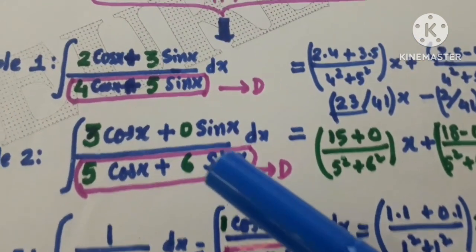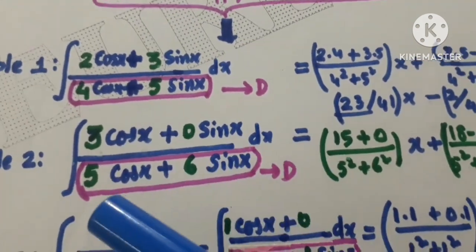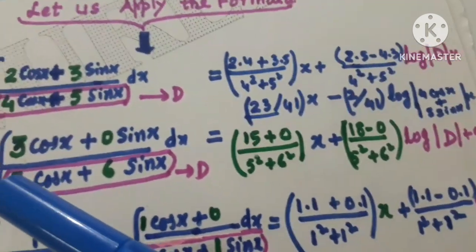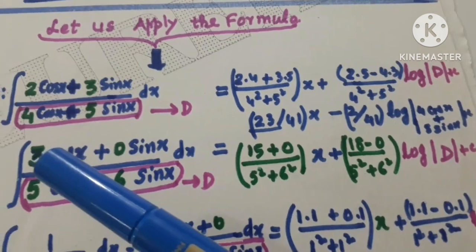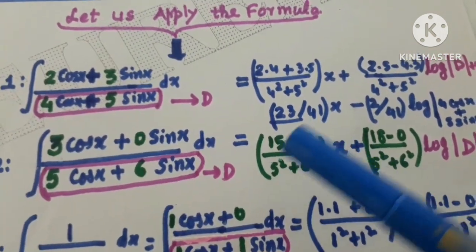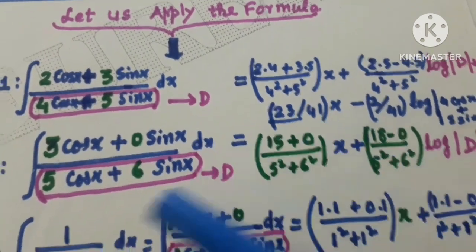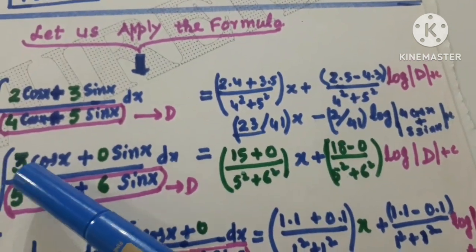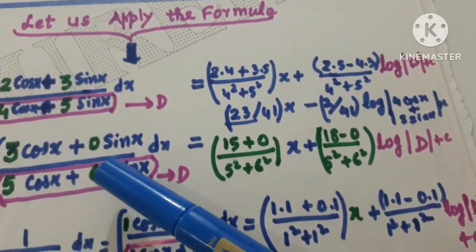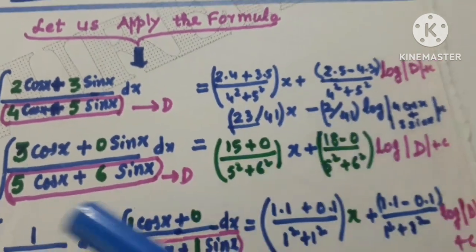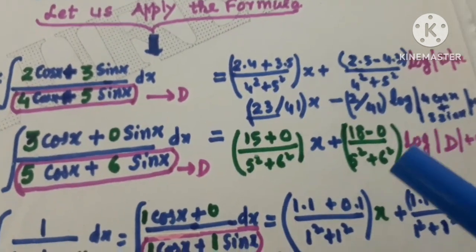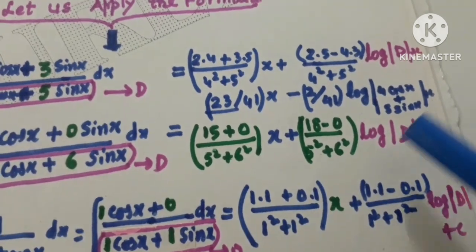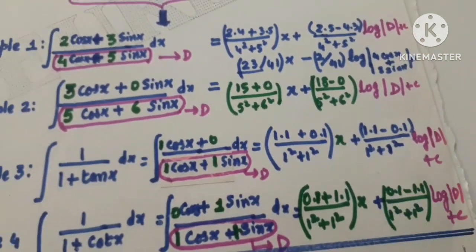Let us go to the second example: (3 cos x + 0 sin x) / (5 cos x + 6 sin x). Play criss cross criss: 3×5 = 15, 0×6 = 0, so numerator of x-part is 15. Denominator is 5² + 6². Cross multiply: 3×6 = 18, 5×0 = 0, so ad − bc = 18. Denominator is 5² + 6², and log of the denominator. Question is done.